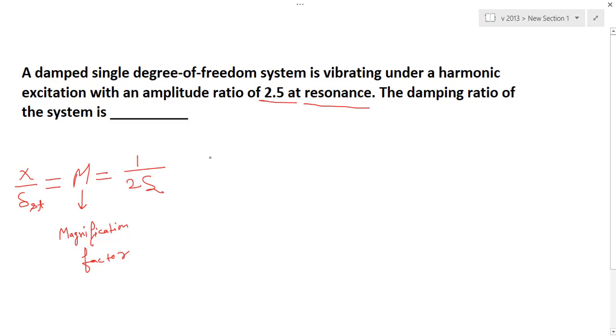So amplitude is given 2.5, then I have to find out ζ. How to find out ζ? So 1 by 2 into 2.5 equals ζ. Yeah, ζ is equal to 0.2. So here I got 0.2 is the right answer.